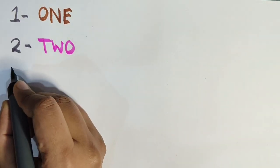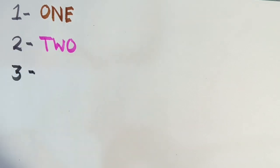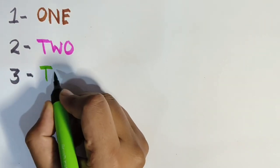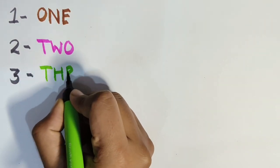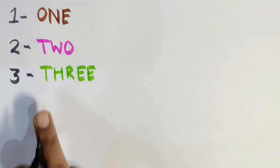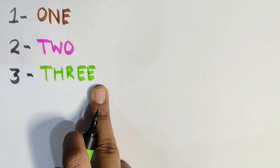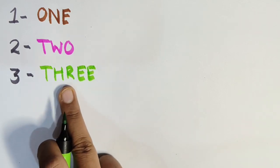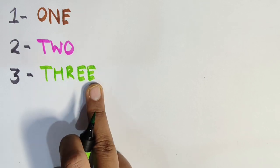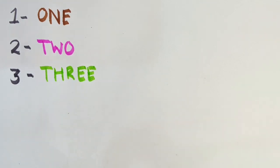Next is three. What is the spelling of three? So the spelling of three is T-H-R-E-E. T-H-R double-E. Three. Repeat after me: T-H-R double-E. Three. Okay, T-H-R double-E. Three.